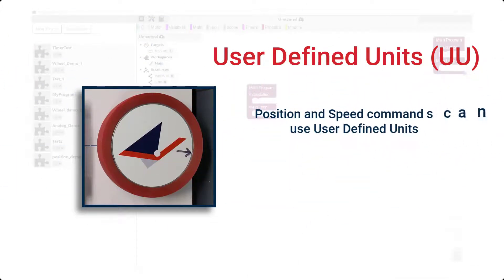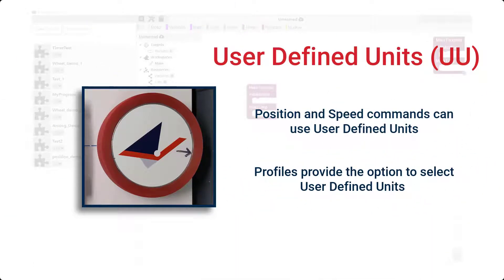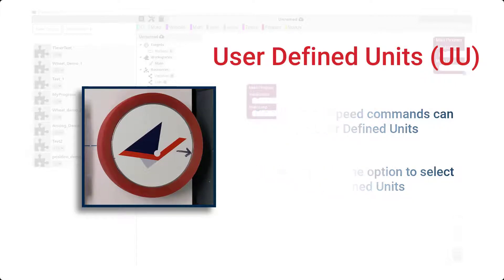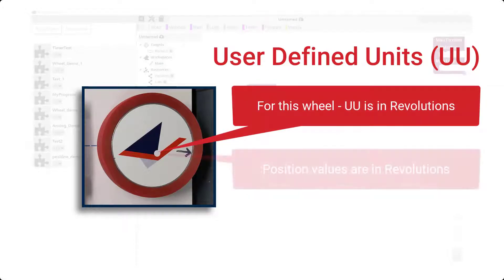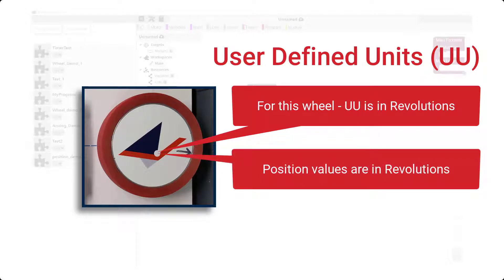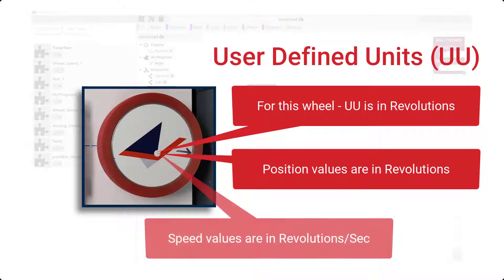We know that the ElectroCraft wheel unit's axis profile includes a definition for user-defined units. This means that when we select user-defined units in a motion profile, any data we provide for motor commands in our program will be expecting the data in these user-defined units. For this ElectroCraft wheel, the user-defined unit is revolutions of the wheel. So if we are specifying a position, we need to provide a value in wheel revolutions. If we are specifying a speed, we will be providing a value in revolutions per second.